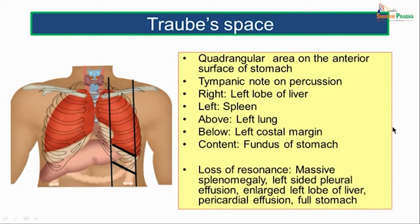Traube's space is a quadrangular area seen on the anterior surface of the stomach. On percussion, we get a tympanic note in this area. Its boundaries are: the left lobe of the liver on the right, the spleen on the left, the left lung superiorly, and the left costal margin inferiorly. The fundus of the stomach lies in this space and contains ingested air at all times, which gives the tympanic note on percussion.